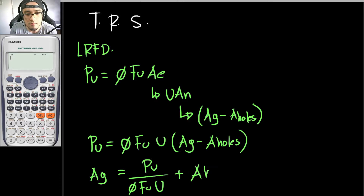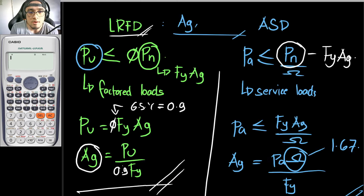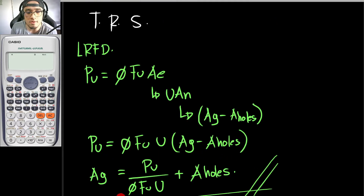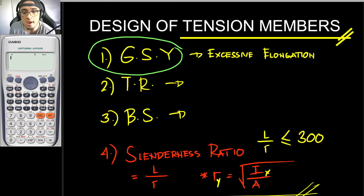This equation gives the gross sectional area needed to resist tensile rupture stress. Comparing the Ag from gross sectional yielding and the Ag from tensile rupture stress, whichever is larger governs. Once you have your Ag, you then check whether the member can withstand block shear and satisfies the slenderness ratio requirement.